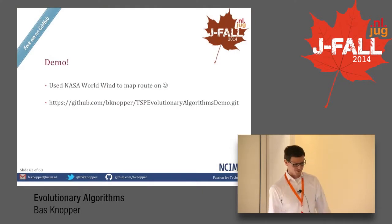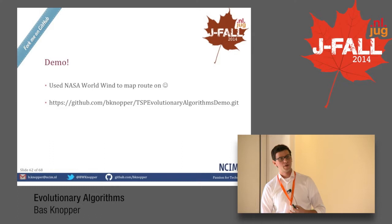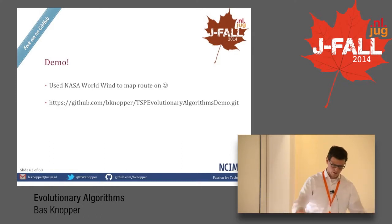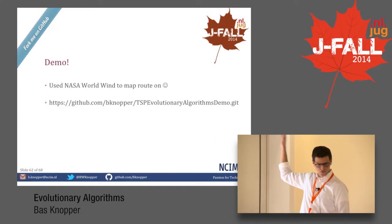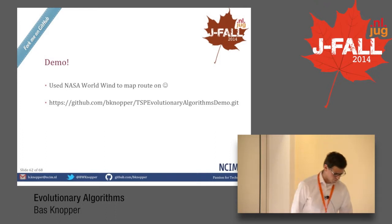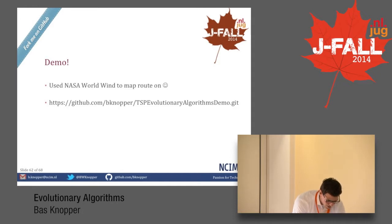That was all the theory. Let's do a demo. I used NASA Worldwind to map the route on. You can fork me on GitHub — it's open source. Just search for the TSP evolutionary algorithm demo; it stands out by itself since I don't have many repositories. The GitHub link is at the bottom as well.